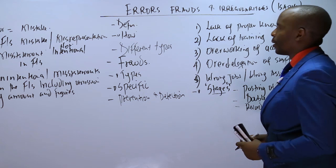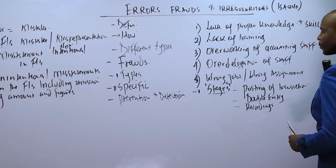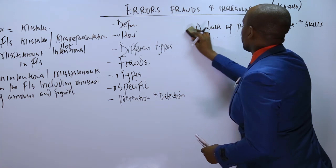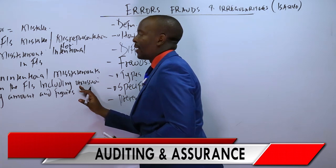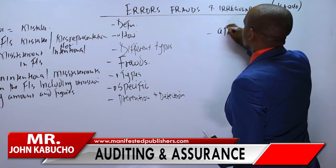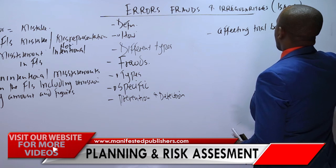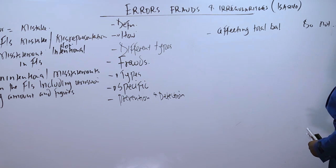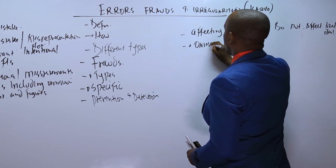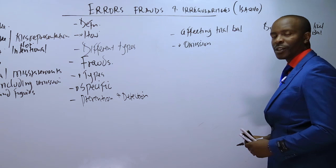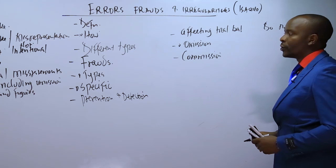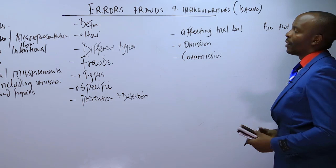Before covering different types of errors, let's revisit errors covered previously in financial reporting or financial accounting. There are errors affecting trial balances and errors that do not affect trial balances. Errors of omission occur when a transaction is completely omitted from the financial statement. Errors of commission occur when a wrong transaction is recorded in the ledgers — when an item is included in a way it's not supposed to be.